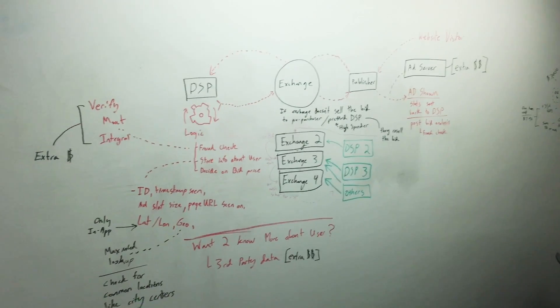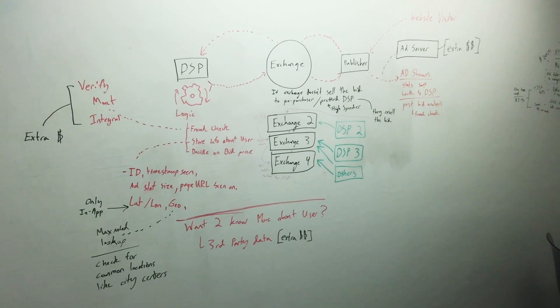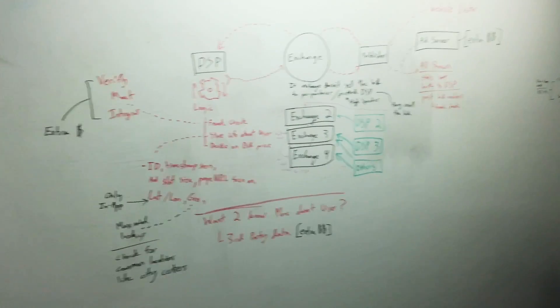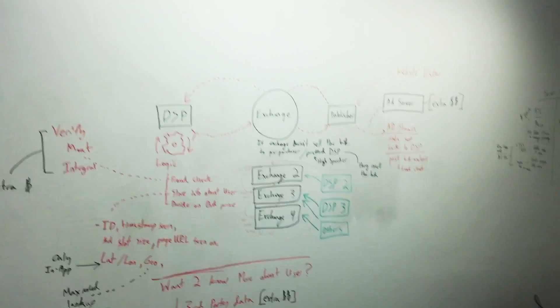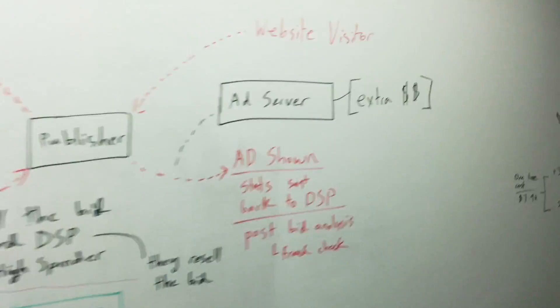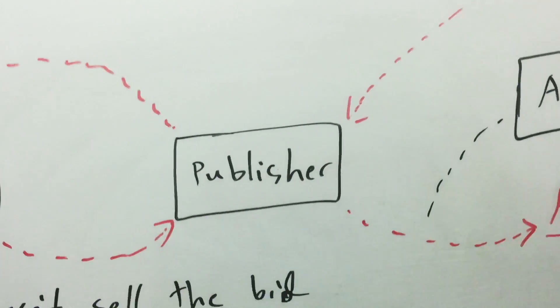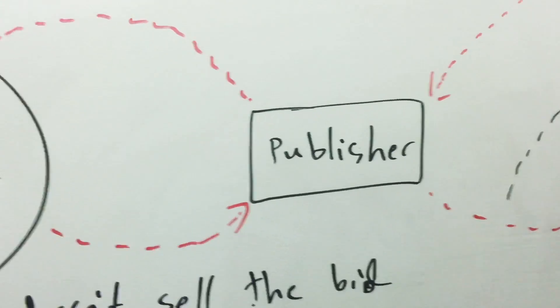Alright guys, so this is my overview of a little bit more advanced on how DSPs and bidding occurs and all the fees that fall into that. I'm just going to use my iPhone to run through this. A website visitor basically comes to a website, so that's the publisher.